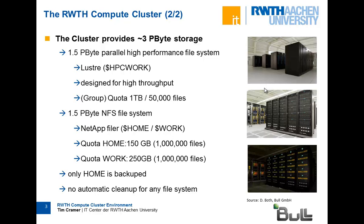The second partition is an NFS file system — a NetApp filer with 1.5 petabytes. You access it via $HOME and $WORK, with quotas of 150 and 250 gigabytes respectively, and you can store up to 1 million files. Only the home file system is backed up — backup is expensive — which is why the quota is smaller there. Easy-to-reproduce data like compiled applications or recalculable results should go in $WORK, while everything else should go in your home directory. There is currently no automatic cleanup on any file system.